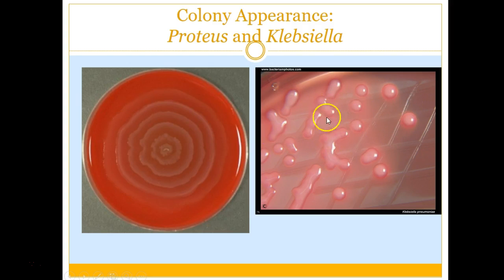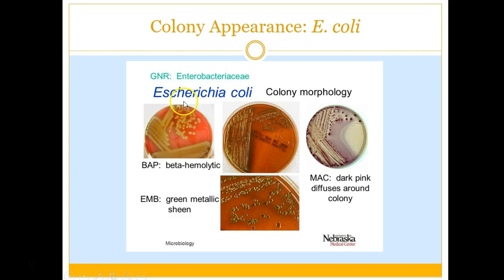On the right side, that's Klebsiella — see how mucous-y and snotty-like it looks? And here is E. coli. E. coli on blood agar is beta-hemolytic. Typically on MacConkey agar, E. coli is a lactose fermenter so it will be a pink-purple colony.